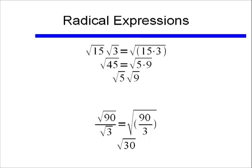And if I break those up, the square root of 5 times the square root of 9, well I know that the square root of 9 is equal to 3, so the square root of 45 can be simplified as 3 square root of 5.